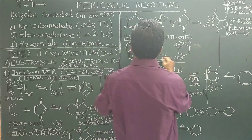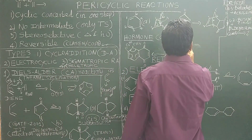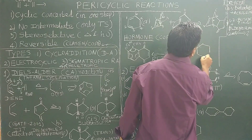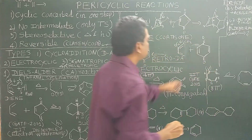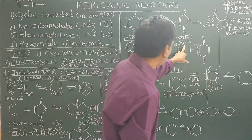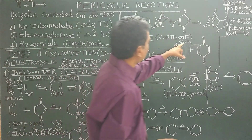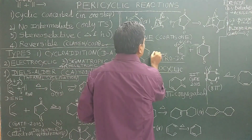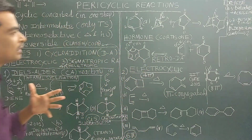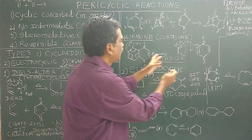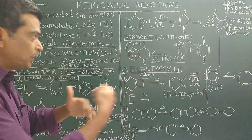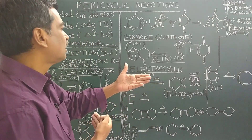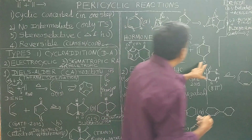Pericyclic reactions are very useful in synthetic chemistry — they can be easily carried out and the yields are very high. For example, cortisone (a hormone) can be prepared using a retro-Diels-Alder approach. You break certain bonds to identify the diene and dienophile. Here we have an electron-releasing group and an electron-withdrawing group, so the reaction is very much favored. You will be given a product and asked: what are the reactants? If you know the Diels-Alder reaction, you can think in reverse and obtain the reactants.